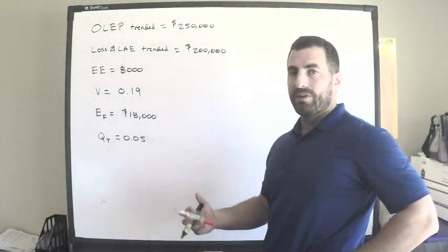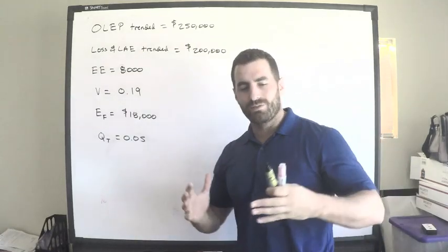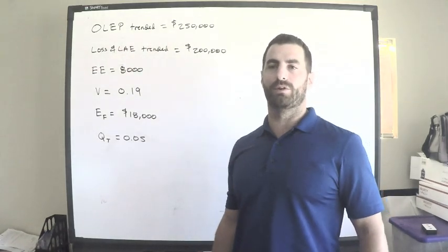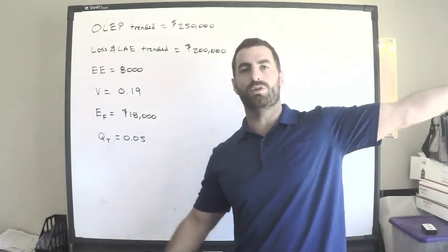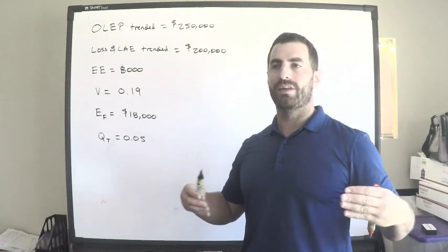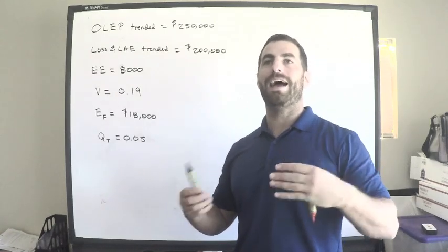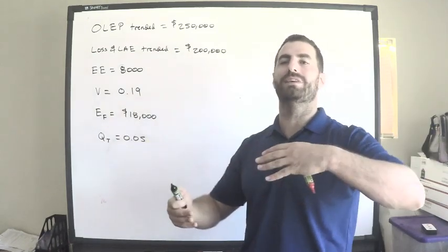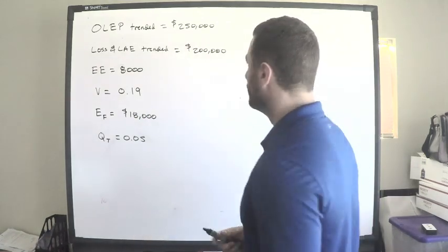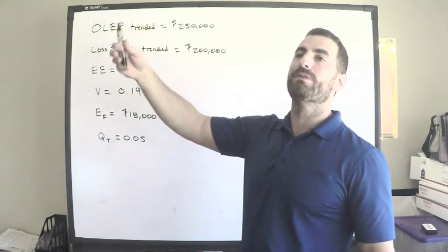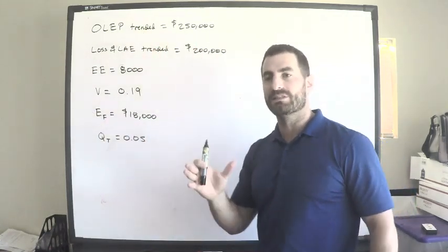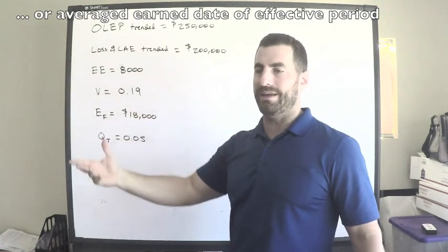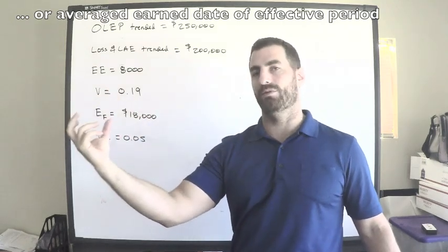This is the situation. Let me talk about what I've written here. On-level earned premium trended - we went over a video where we on-leveled earned premium, bringing all our historical rates to the current level. We want to restate all our premium so that it's valued at the current rate level. Insurance companies make rate changes, and we restate historical premium. Then we trend it forward to a future date, usually the average written date for a particular period for which we're enacting our rates.